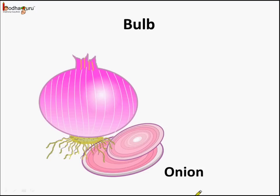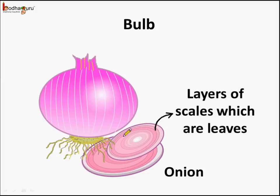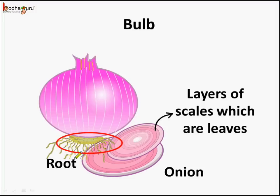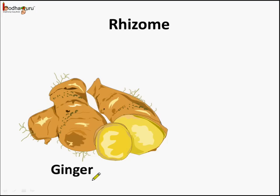What about onion? Onion is a bulb and this is also a modified stem — to be specific, an underground modified stem. Here we see the onion has layers of scales which are actually leaves, and inside there is a bud. Also we see the base of the onion has roots. So onion is an underground stem and it is called a bulb.